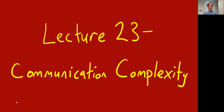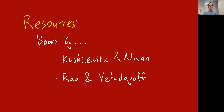This is lecture 23, the first in a new small unit. Now that we're done with CSPs and linear programs, we're going to talk about communication complexity and information theory, and maybe some learning theory. Today we start with communication complexity. There are two books I recommend: the classic book by Kushilevitz and Nisan, and a really new book by two experts, Rao and Yehudayoff.